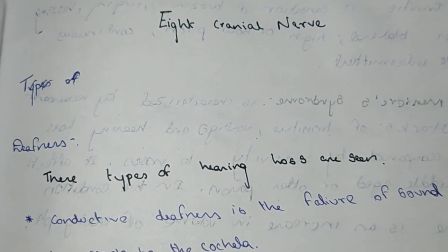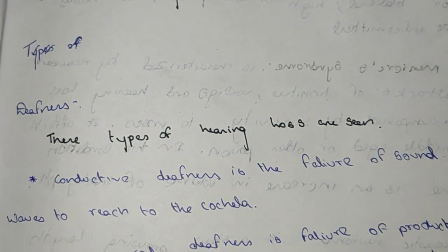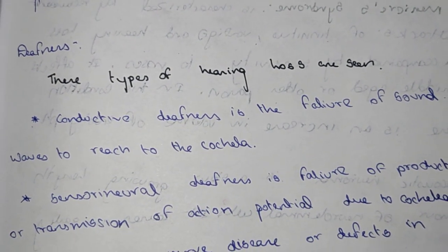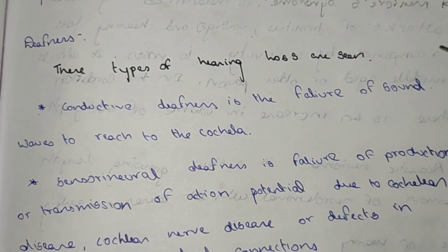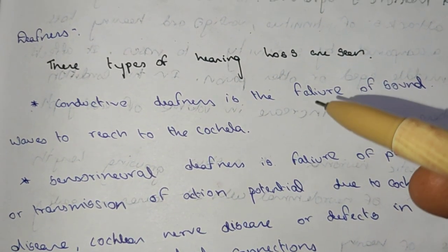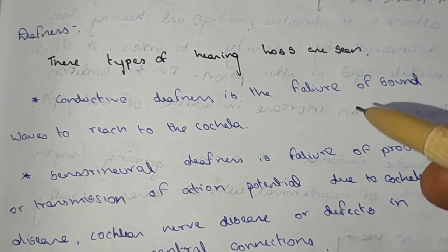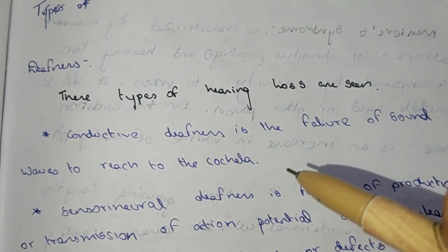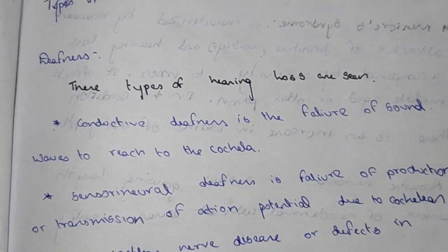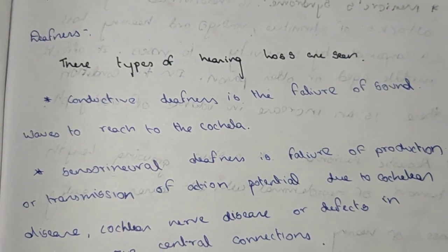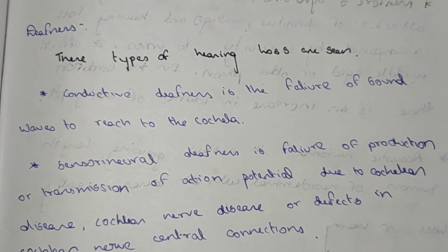Welcome to Mad Story YouTube channel. In this video we are going to see the eighth cranial nerve applied anatomy. The first type is loss of hearing sensation. Conductive deafness is the failure of sound waves to reach the cochlea — when sound waves reach the cochlea there will be hearing, and failure of these waves to reach the cochlea leads to deafness.